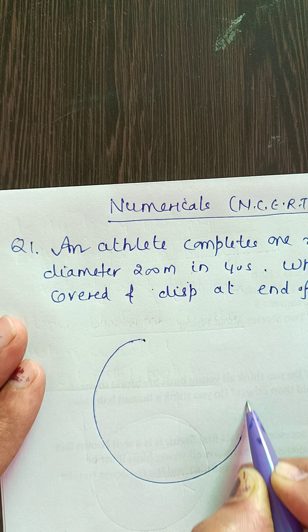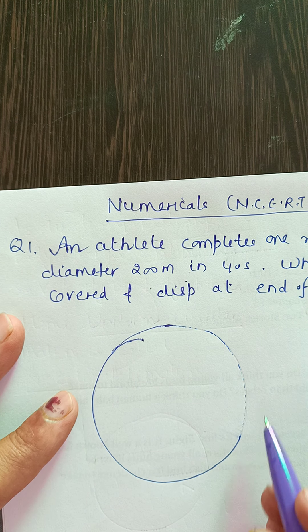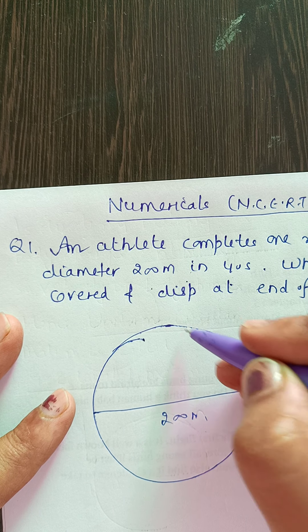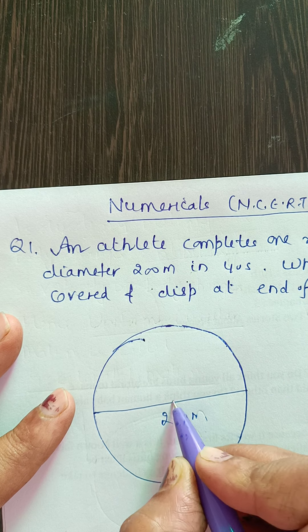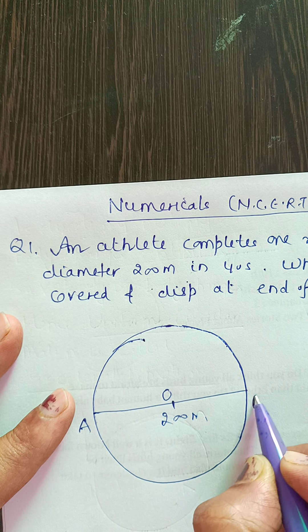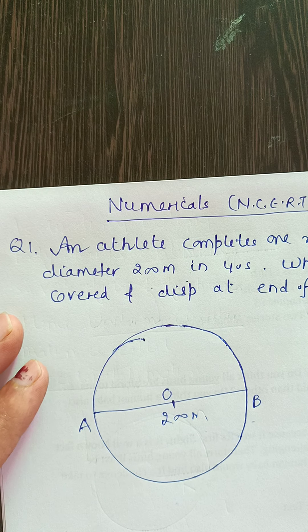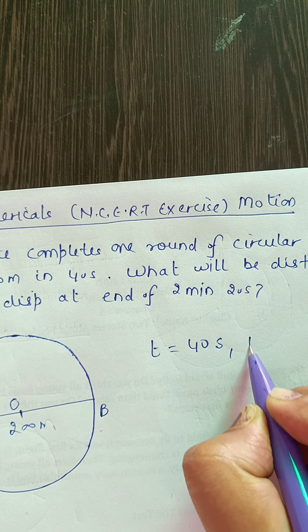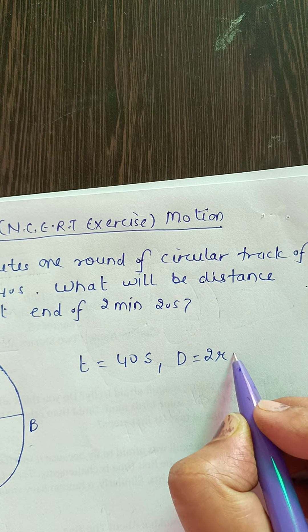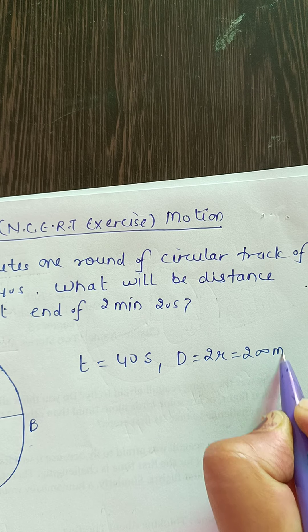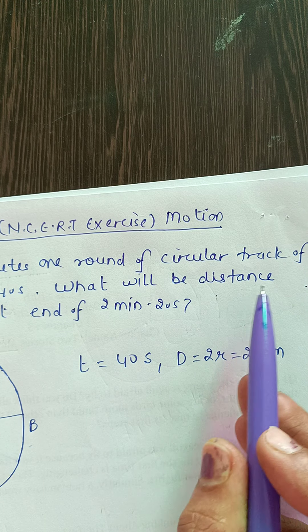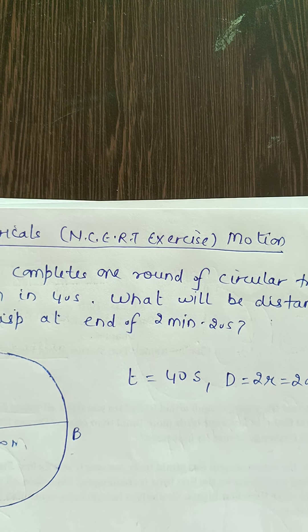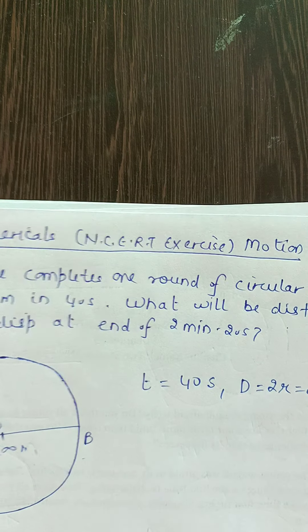When we are solving this, first write down the data. An athlete completes one round, diameter 200 meter. This is center O, this is diameter AB and time taken is 40 seconds. Time for one round is 40 seconds and diameter that is twice of radius, this is 200 meter.